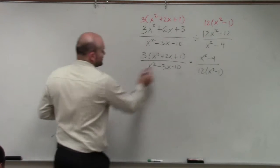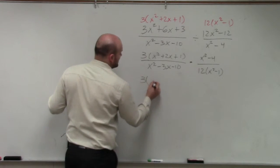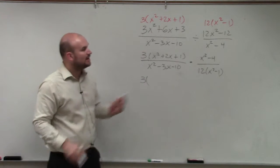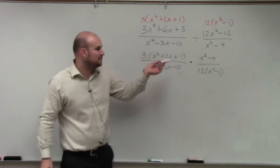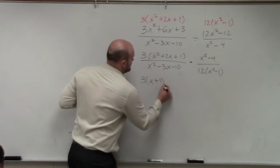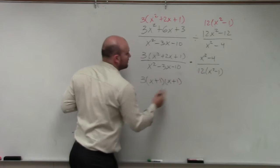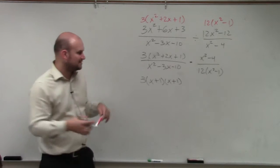Now, we factor each of these as much as we can. x squared plus 2x plus 1. What two numbers multiply to give you 1? Add to give you 2x. x plus 1 times x plus 1. I'm going to, instead of writing it squared, I'm going to leave it factored out.